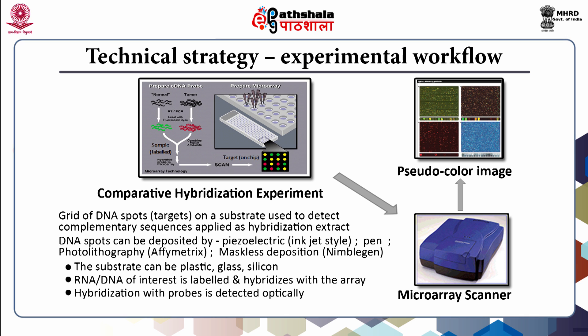DNA or RNA of interest is labeled and hybridized with the array. Hybridization with probes is then detected optically. Basically it is a high-throughput process of traditional hybridization experimentation, involving chip manufacture, making the array platform, utilizing this platform to hybridize, detecting with microarray scanners, and analyzing the image using various technologies.